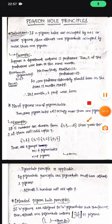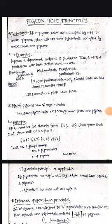First, I am discussing the definition of Pigeon Hole Principles. The definition is: if n pigeon holes are occupied by n plus 1 or more pigeons, then at least one pigeon hole is occupied by more than one pigeon.